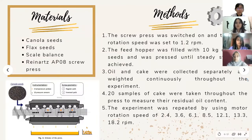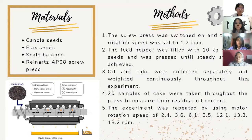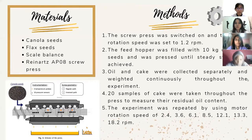For this experiment, the materials used are canola seeds, flax seeds, a scale balance, and a Reinaud AP08 screw press. The Reinaud AP08 screw press is a ready-made press for cold pressing of oil seeds. The press is equipped with a single rotating screw and surrounded by a perforated cage for oil outflow. The equipment consists of four parts with regular and reverse parts, and is installed with knives and instrumented with three temperature probes, 16 pressure sensors, and two balances for oil and press cake outflow rate weighing.